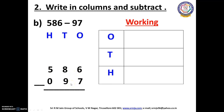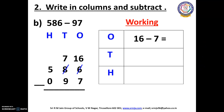We start from the 1's place. Here we have 6 and 7. We cannot subtract 7 from 6, so we have to borrow from the 10's place. Now 8 will change into 7 and 6 will change into 16. Now we can subtract 16 minus 7. Open your fingers: 7 after — 8, 9, 10, 11, 12, 13, 14, 15, 16. How many fingers have you opened? Yes, we have opened 9 fingers. So we have to write 9 here.